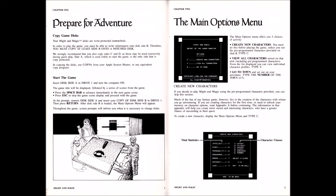Auf den nächsten Seiten sieht man dann die technische Seite der Handbücher: wie installiert man das Spiel, wie kopiert man es, um es zum Laufen zu bringen, und welche Tasten man benutzen muss, um die verschiedenen Optionen aufzurufen. Das war damals natürlich notwendig – zu der Zeit gab es zwar auch schon Windows, aber gerade die älteren Sachen waren alle für DOS rausgekommen und da gab es auch keine Mausunterstützung in den ersten Jahren. Es wurde wirklich alles mit der Tastatur eingegeben und man musste die ganzen Befehle kennen.